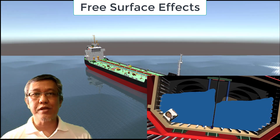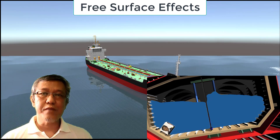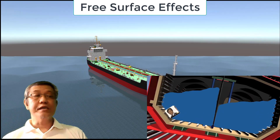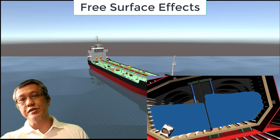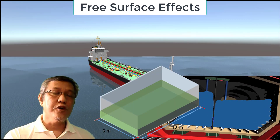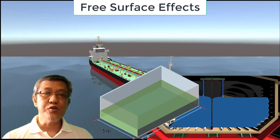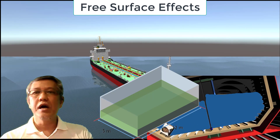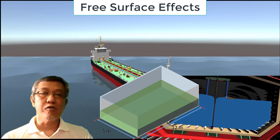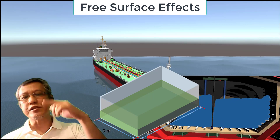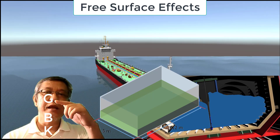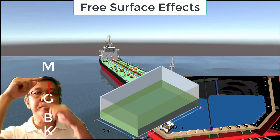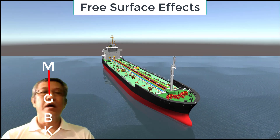Let's discuss first about inertia. The liquid itself has some inertia on the surface and inside the tank, as shown in this drawing. This is effectively reducing or decreasing your ship's metacentric height, or GM. So this is your center of gravity, this is your keel, and this is your metacenter. It decreases your GM.